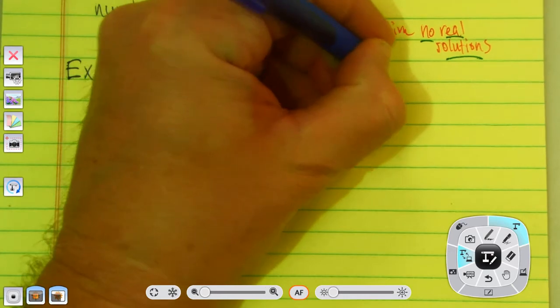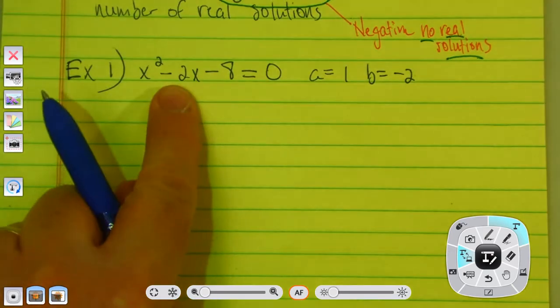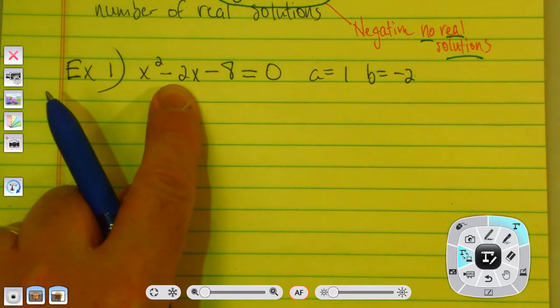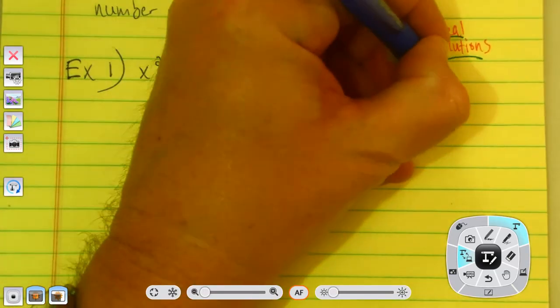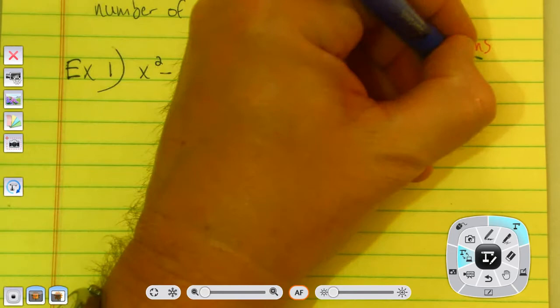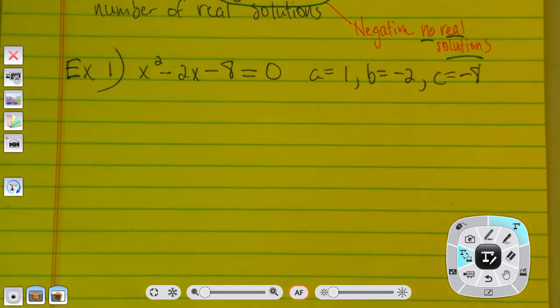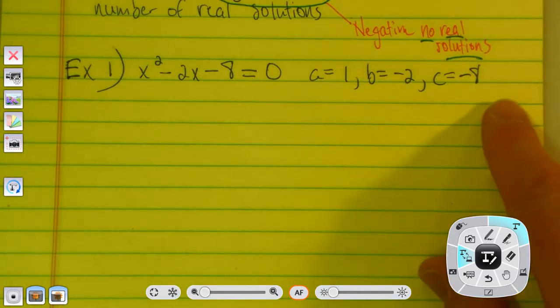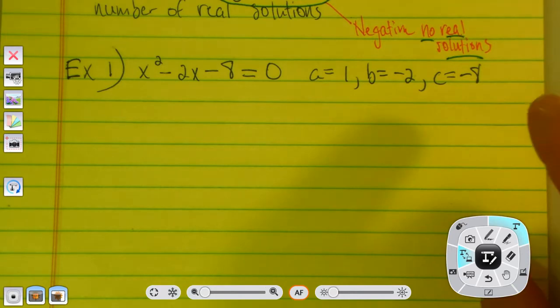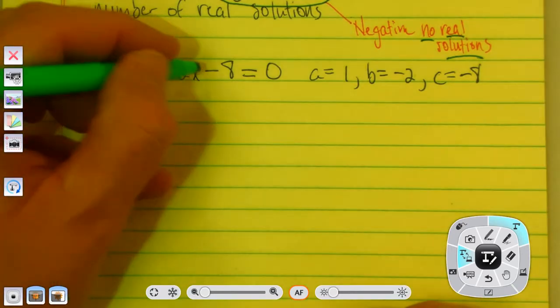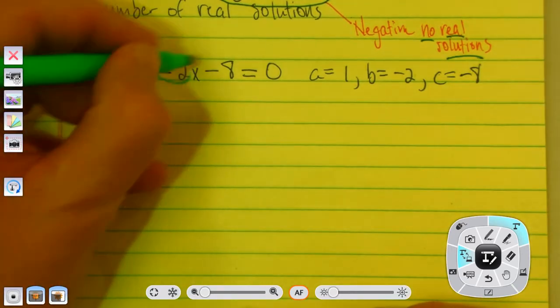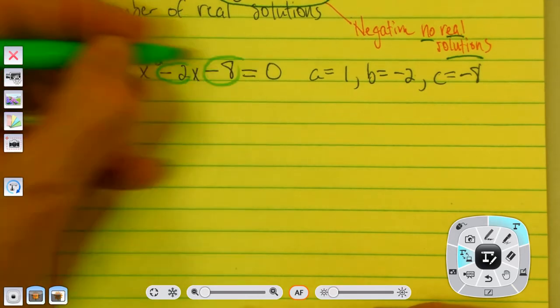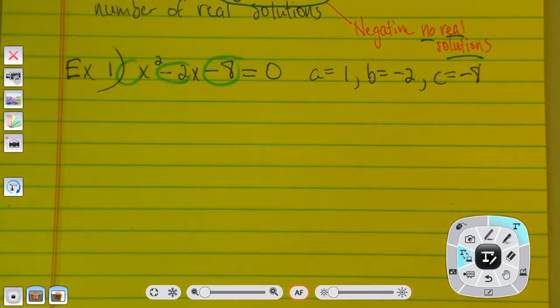b is negative 2. See it right there. And c is negative 8. One of the mistakes I see folks make initially is they'll forget to include a negative with a coefficient.